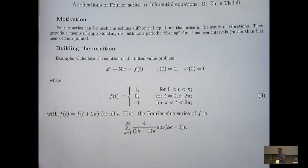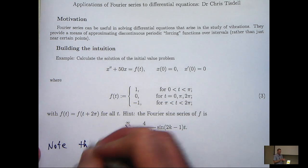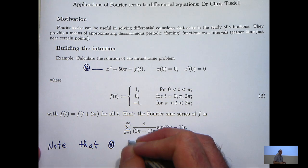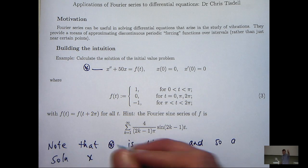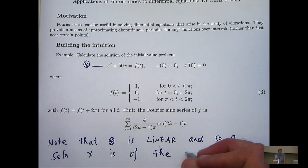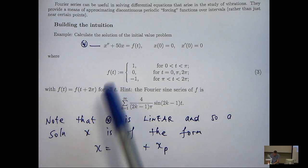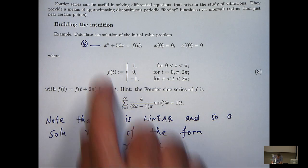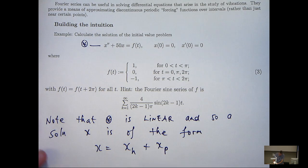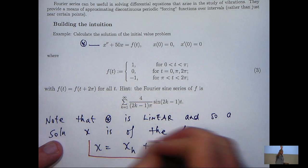I'm going to break it down into a number of parts. The first idea is that this is linear, so we know that a solution — let's call this equation a star — has the form x equals x sub h plus x sub p. Now x sub h is a solution to the homogeneous version of star, where you replace f of t with zero, and x sub p is a particular solution to star that we construct. x sub h is quite easy to formulate; x sub p takes a bit more work.